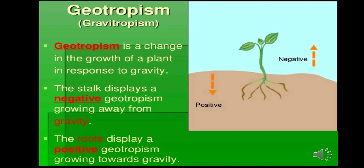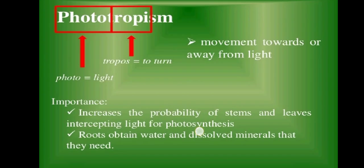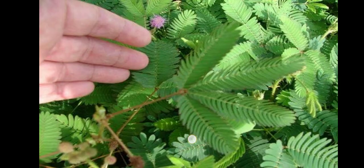If a plant part is responding towards a touch, it is positive thigmotropism. If the plant part is moving away from the touch, it is negative thigmotropism. The Mimosa pudica plant I showed you earlier — what kind of tropism does it show? That is thigmotropism, and specifically it is negative thigmotropism, because the leaves respond by moving away from the touch.